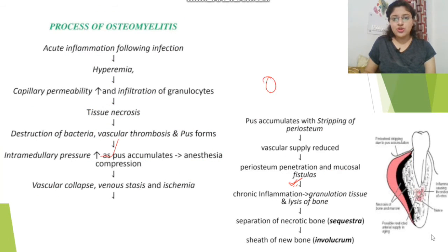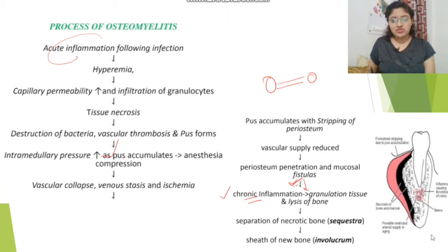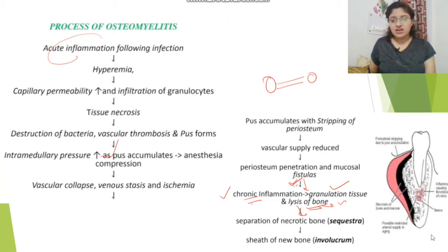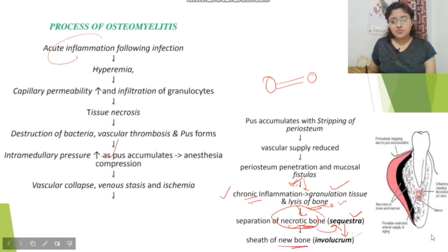After that comes chronic inflammation. First acute inflammation, which then leads to chronic inflammation. Granulation tissue forms, bone lysis and bone breakdown occur. The bone becomes necrotic, and this necrotic bone is called sequestra. The sequestra then becomes surrounded by a new sheath called the involucrum.